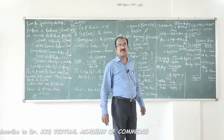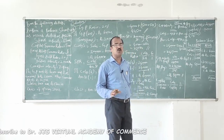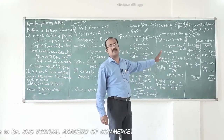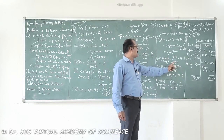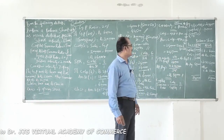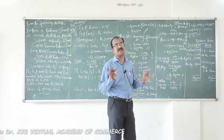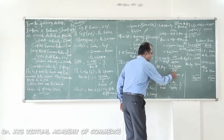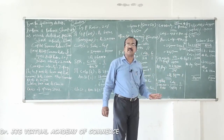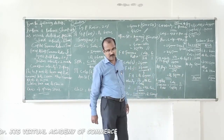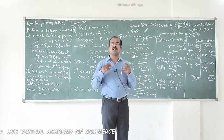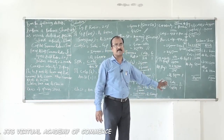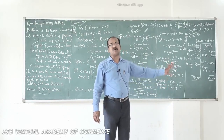Now applying creditors velocity: 365 ÷ 2,45,000 × Accounts Payable = 73 days. So Accounts Payable = 73 × 2,45,000 ÷ 365 = 49,000 rupees. Since there is no adequate information to separate creditors from bills payable, we leave it as accounts payable and place it as-is on the liability side of the balance sheet.